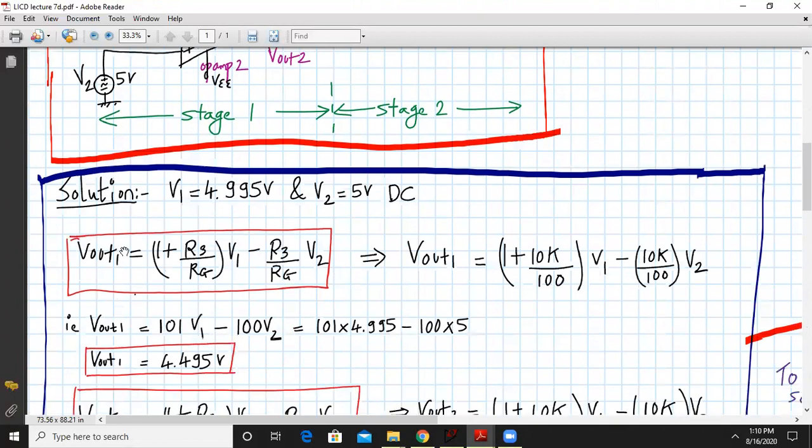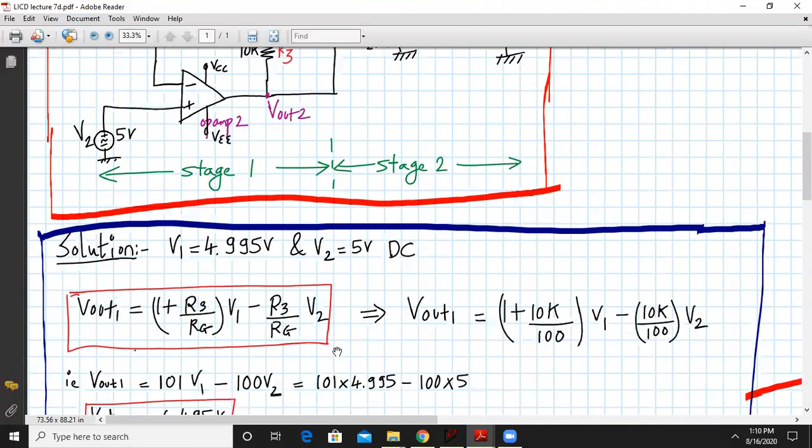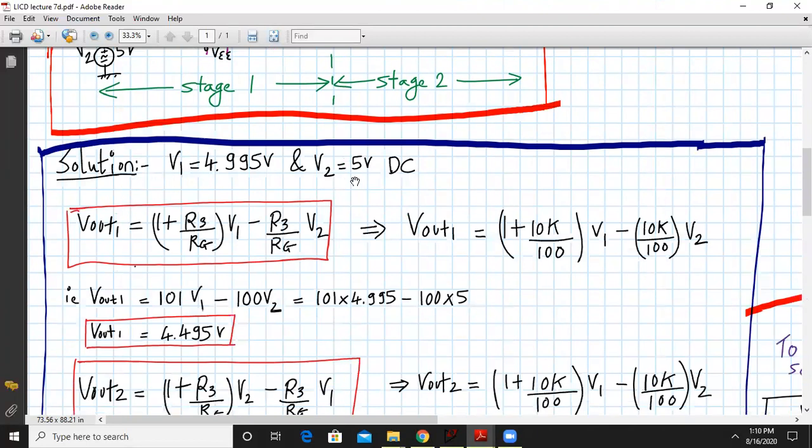For the solution part we have already in the last lecture derived the equation for Vout1, Vout2 and the overall output expression Vout. V1 and V2 are given to us. Vout1 is (1 + R3/Rg) × V1 - (R3/Rg) × V2 and we know the value of R3 and Rg, that is 10k and 100. So we can substitute it over here. We will get Vout1 as 101V1 - 100V2, which equals 4.495 volts.